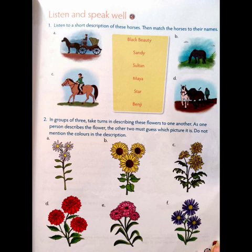Now in groups of three, take turns describing these flowers to one another. As one person describes a flower, the other person must guess which picture it is — do not mention the colors in the description. This is just a description of the flowers. There are different flowers: daisy, sunflower, marigold. You have to describe them with describing words. This is oral work which you can do at home, and this finishes your lesson 'The Bell of Atri'.